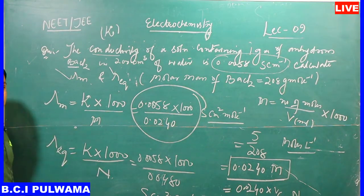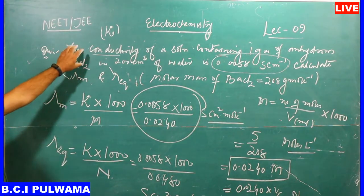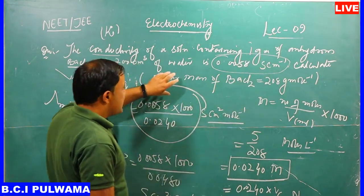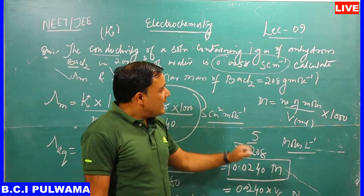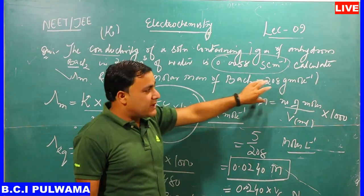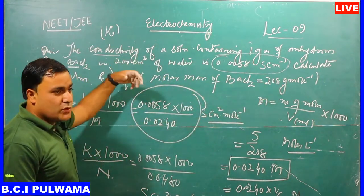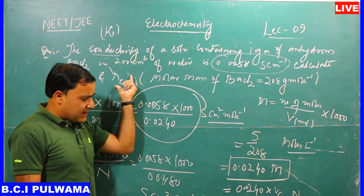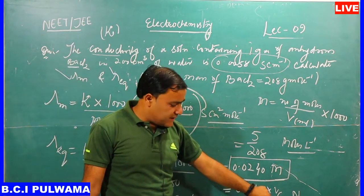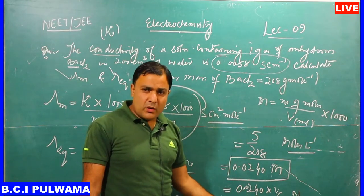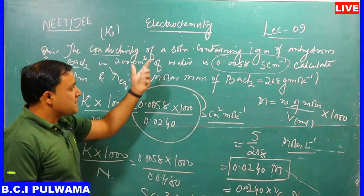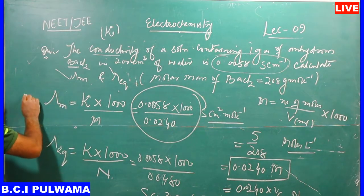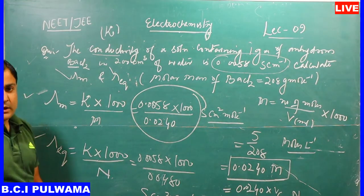To summarize Problem 2: given 1 g of BaCl₂ with molar mass 208 g·mol⁻¹ in 200 mL solution, we calculated moles, then molarity, then normality (using valency factor = 2). Using the given specific conductivity, we substituted into the expressions for molar conductivity and equivalent conductivity.